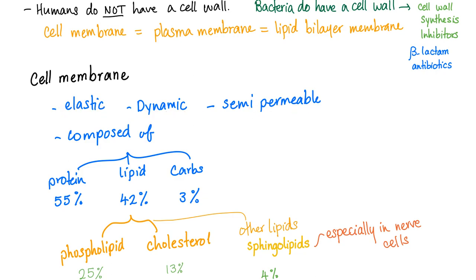It's elastic, dynamic, semi-permeable, composed of protein, lipids, and carbohydrates, mostly proteins. Lipids are phospholipids, cholesterol, sphingolipids especially in nerve cells, and other types of lipids.